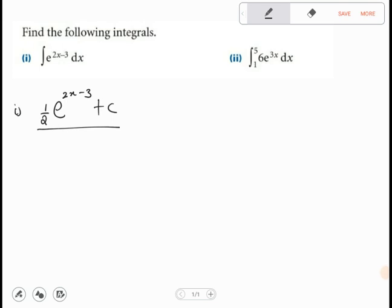Then for part 2 we have, we are finding the integral, that's a definite integral by the way, 1 to 5 of 6e to the power 3x dx.